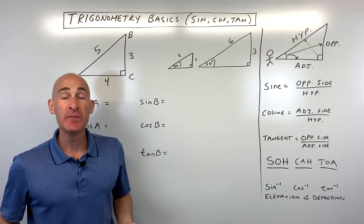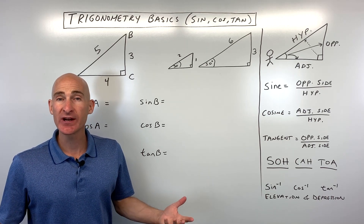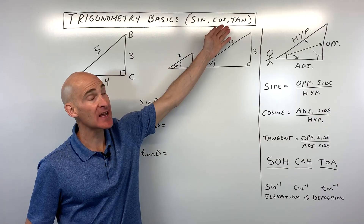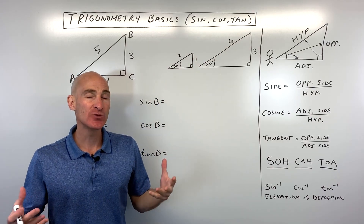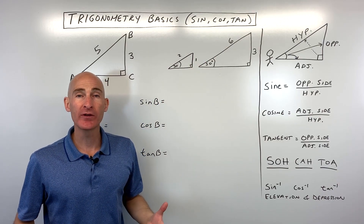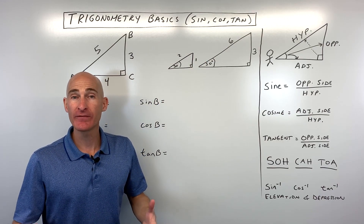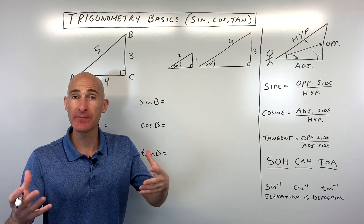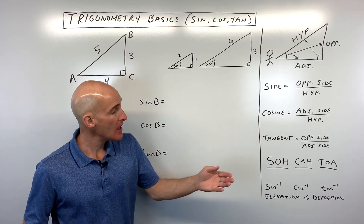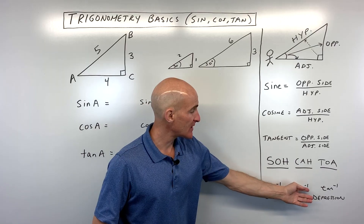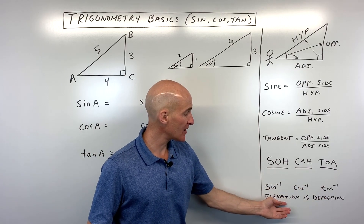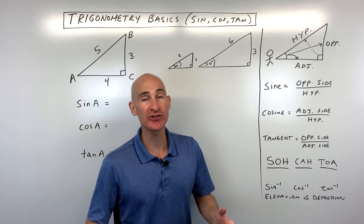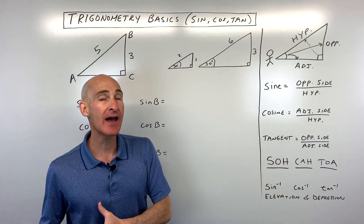In this lesson you're going to learn the basics of trigonometry. We're going to be talking about the sine, cosine, and tangent ratios, as well as how to work with the angles in a triangle to find missing sides, or to work with the sides of a triangle to find missing angles. We're going to be doing the sine inverse, cosine inverse, tangent inverse, as well as talking about the angle of elevation and angle of depression. So let's dive right in.